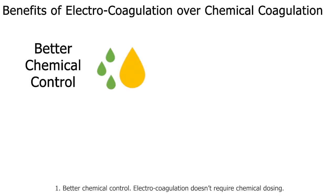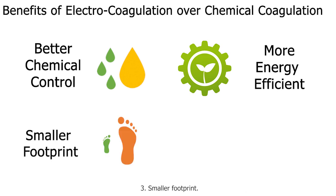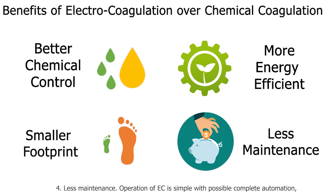Benefits of electrocoagulation over chemical coagulation are being explored. Potential advantages include: one, better chemical control — electrocoagulation doesn't require chemical dosing, minimizing chemical transportation and handling; two, more energy efficient — the energy consumption per coagulant produced by electrocoagulation could be reduced significantly due to the high conductivity of seawater; three, smaller footprint — electrocoagulation reactors are compact as they don't require rapid mixing chambers.